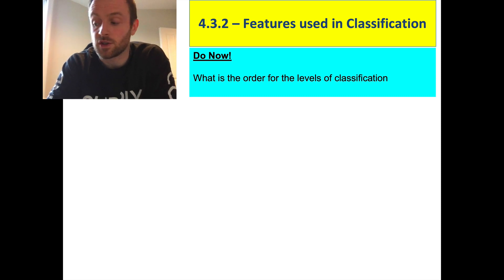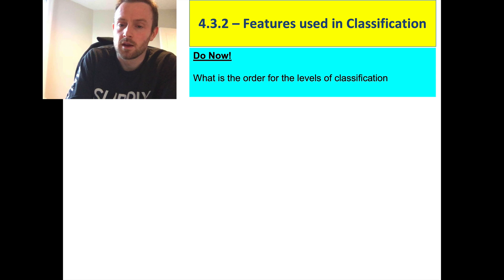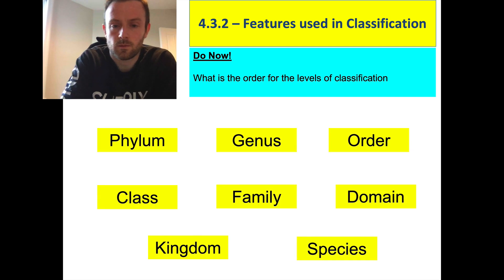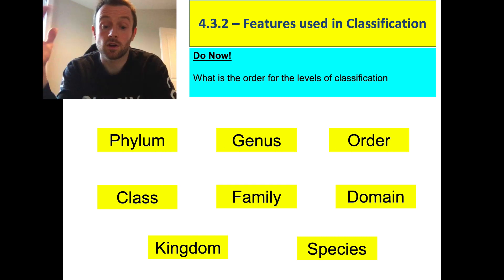Welcome to this lesson about the features used in the classification system. Last lesson we looked at the order for the levels of classification. I'd just like to start by seeing if you can remember them. Can you remember them without any prompts at all? Or maybe this would help. See if you can repeat them back to me. What's the order going from the largest to the smallest? Pause the video and see if you're right.